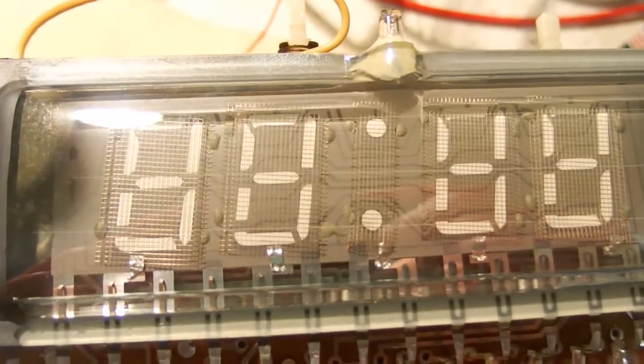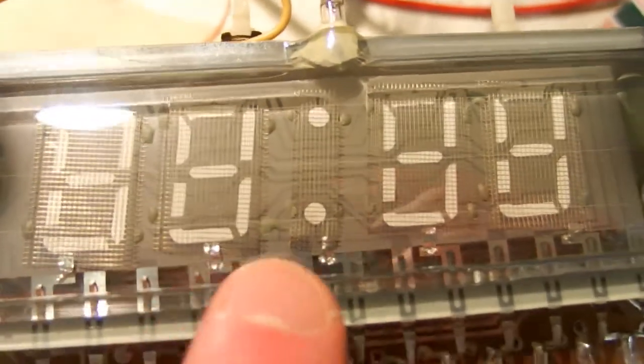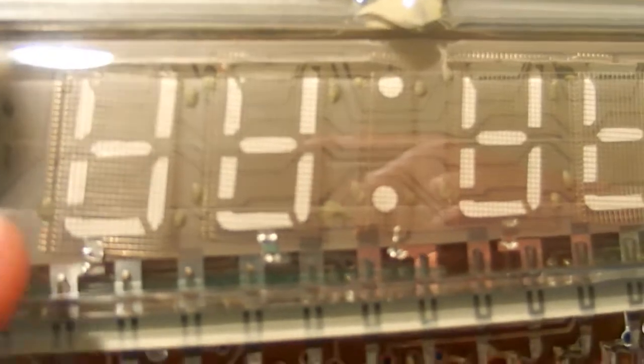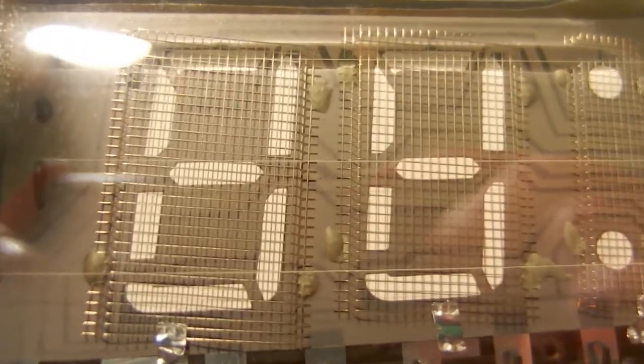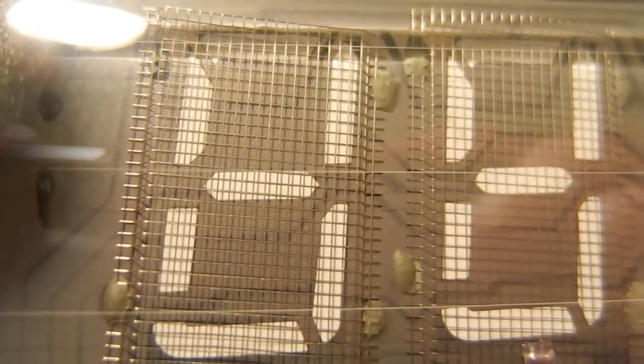It has four digits with seven segments and a colon and each digit has a grid for multiplexing. And there are three heater filaments horizontal in the display. Now maybe you can see them, they are very thin.